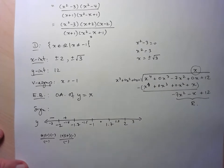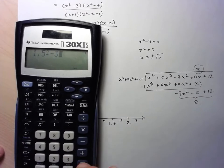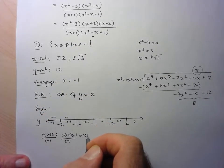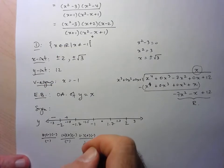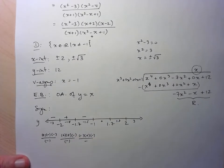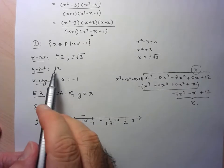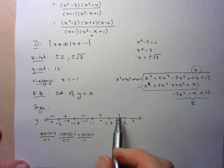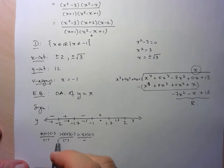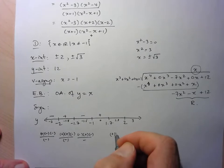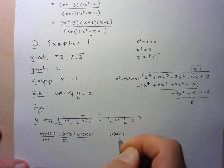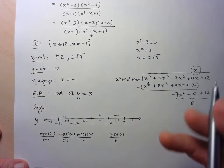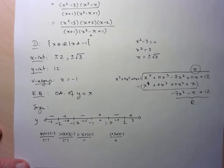For x equals negative 1.5: negative 1.5 squared minus 3 is negative; negative 1.5 plus 2 is positive; negative 1.5 minus 2 is negative; and negative 1.5 plus 1 is negative. That gives positive over negative — negative. For x equals 0, we already tested this at the y-intercept, so it's positive. For x equals 1.8: 1.8 squared minus 3 is positive; 1.8 plus 2 is positive; 1.8 minus 2 is negative; over 1.8 plus 1 which is positive — so negative. For x equals 3, everything is positive, so the result is positive.